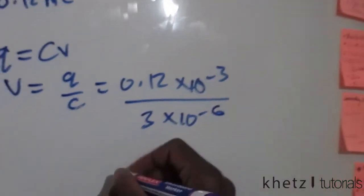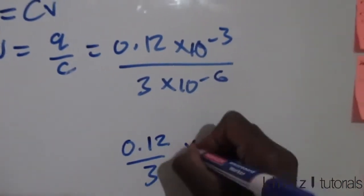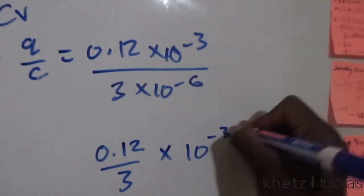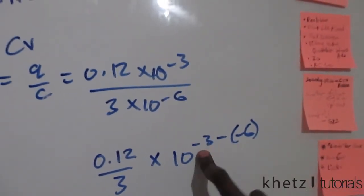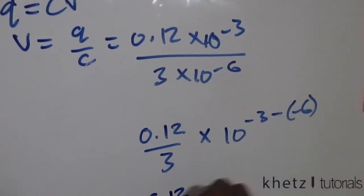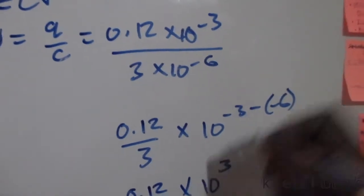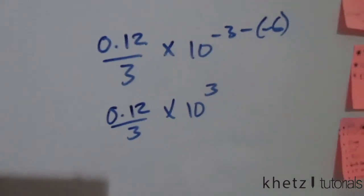This is 0.12 divided by 3, then multiply by 10 to the minus 3 subtract minus 6. This will become 6 subtract 3, so it's 0.12 divided by 3 multiplied by 10 to the 3.